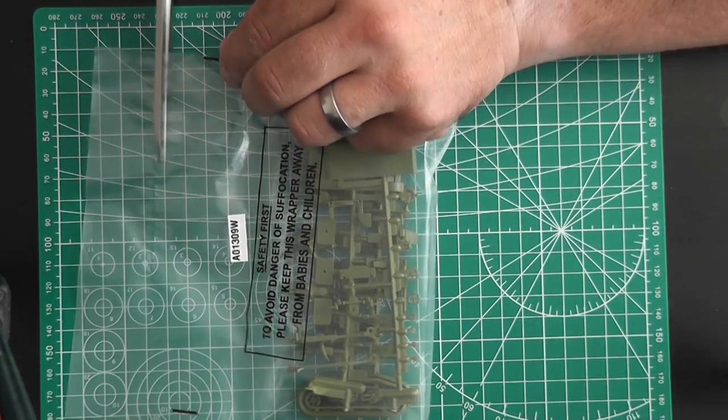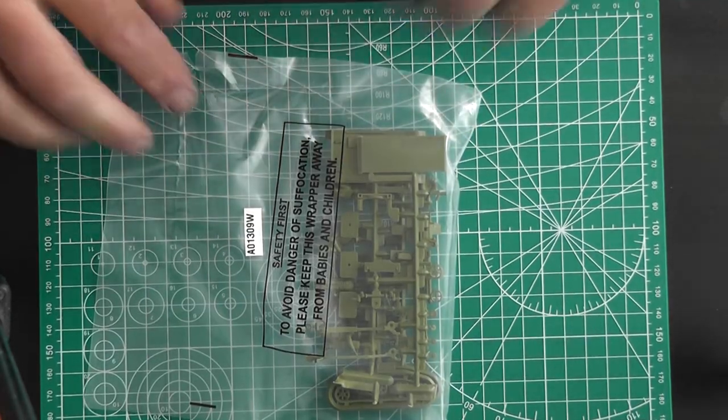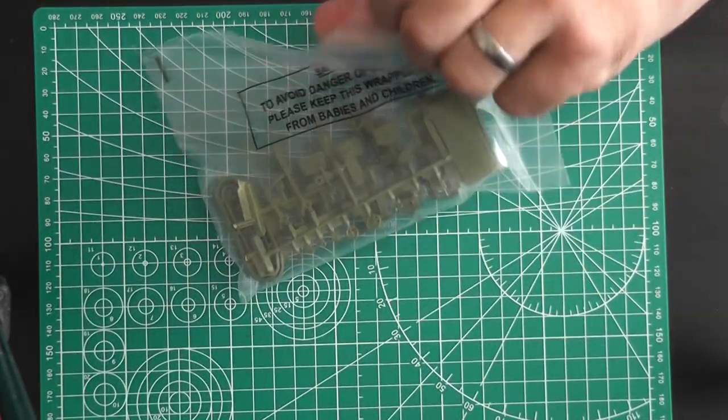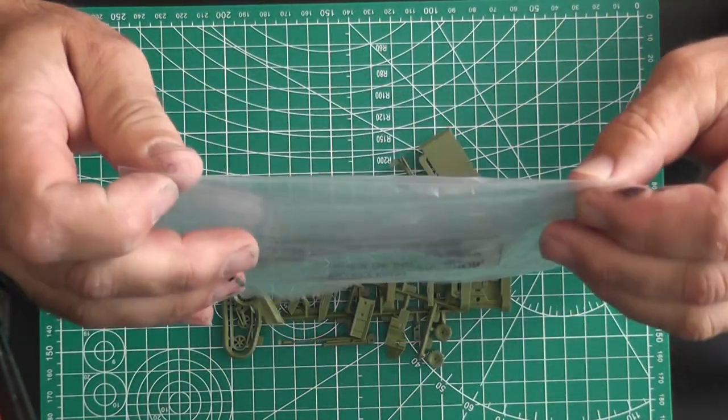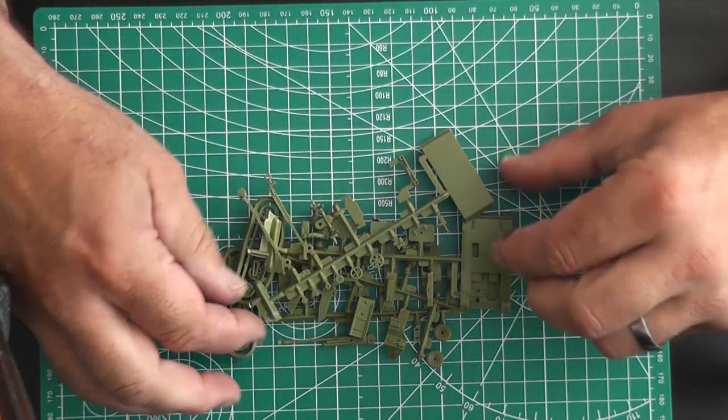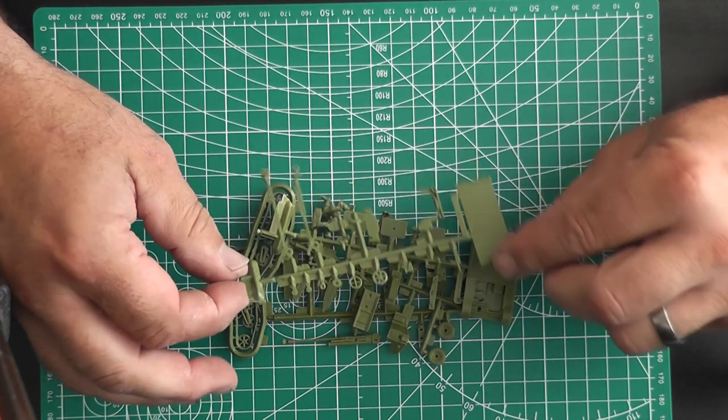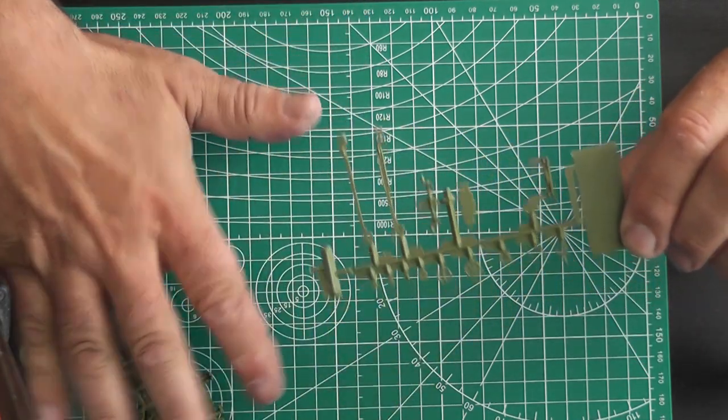Whenever you're using sharp knives, scissors, be careful, ladies and gentlemen, boys and girls. So sprues are in green and they're very old. There's lots of flash, there's not a lot of detail, but then again it is only a very small kit.